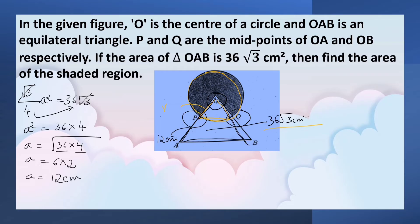But we need radius that is OP and OQ. OP and OQ is equal to half of the side of the equilateral triangle, 12 by 2 that is 6 cm. So, radius of the sector as well as circle is 6 cm. Angle theta is equal to 60 degree since it is the angle of equilateral triangle.